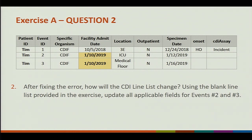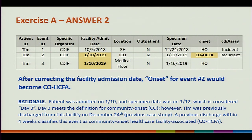Question two: after we fix that data entry error and correct the facility admission date, how does the CDI line list change? The main thing that changes is your onset column. For event number two, when we change the facility admission date to the 10th, the specimen date is on the 12th, so that occurs on day three. However, this patient was previously discharged from the facility, and therefore onset is CO-HICFA. Everything else on the line stays the same.